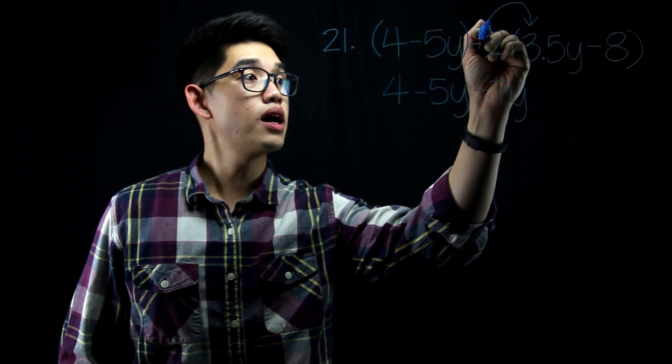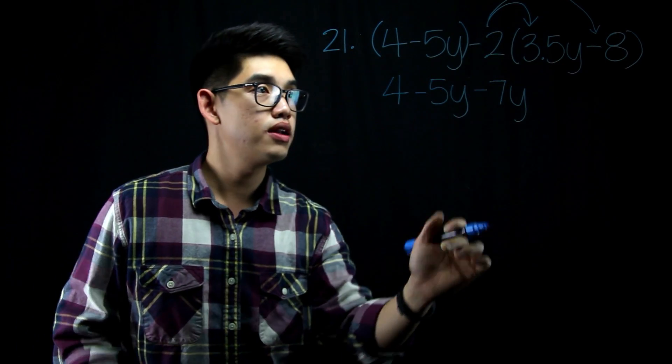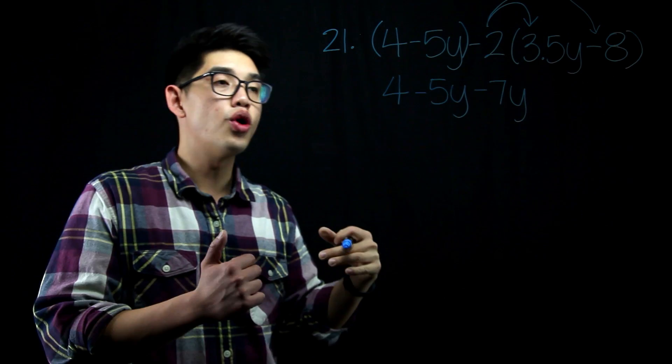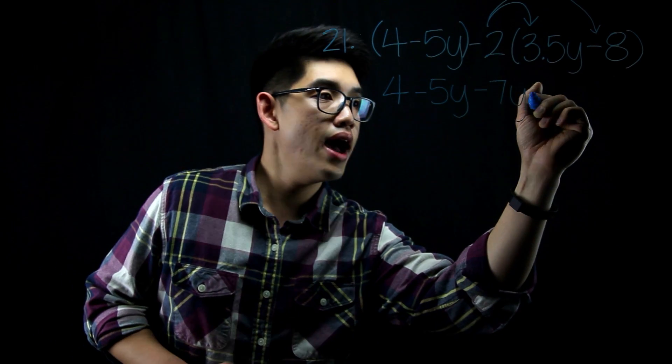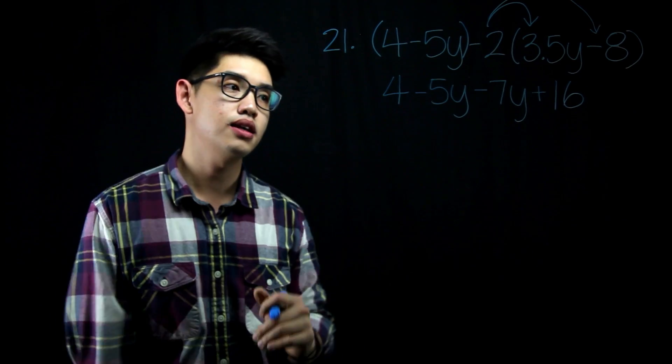And then negative 2 times negative 8. This is where a lot of students forget to distribute the negative to the negative. If you take away double negative 8, you're actually adding 16, not subtracting 16. You're adding 16.